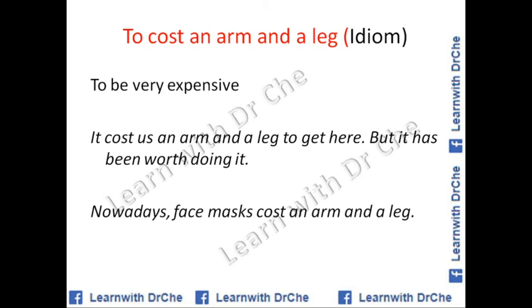Next is an idiom. You don't need to learn too many or rare idioms — you can achieve band 7, 8, or even 9 in all modules without using a single idiom. The idiom 'to cost an arm and a leg' means to be very expensive. Example: it cost us an arm and a leg to get here, but it has been worth it.